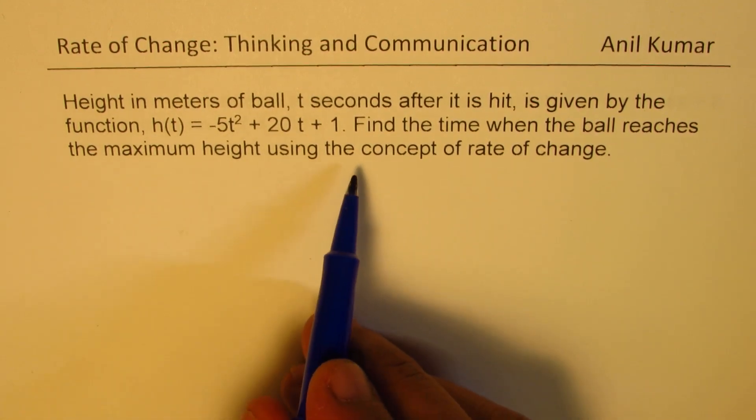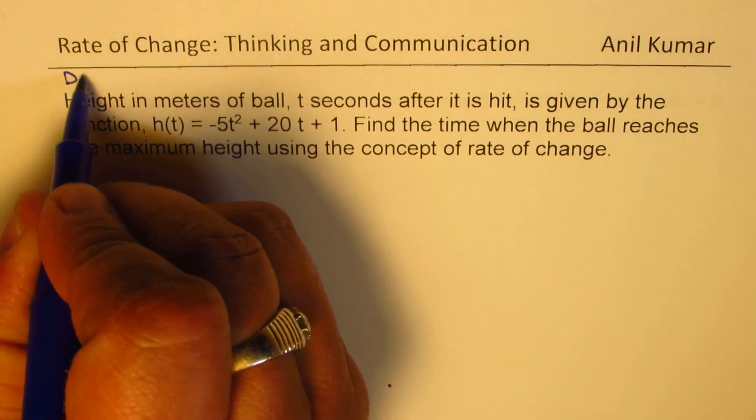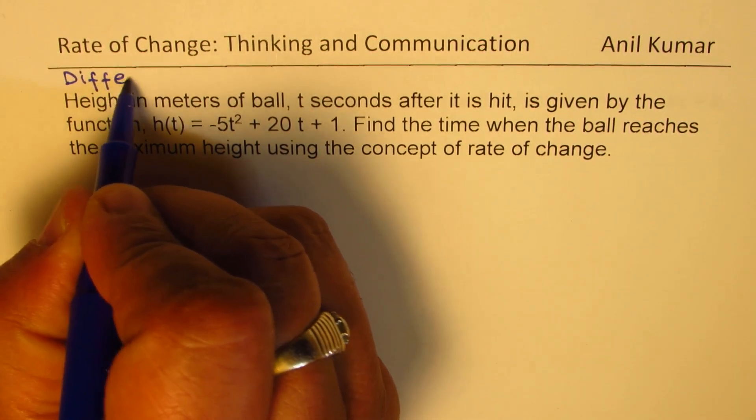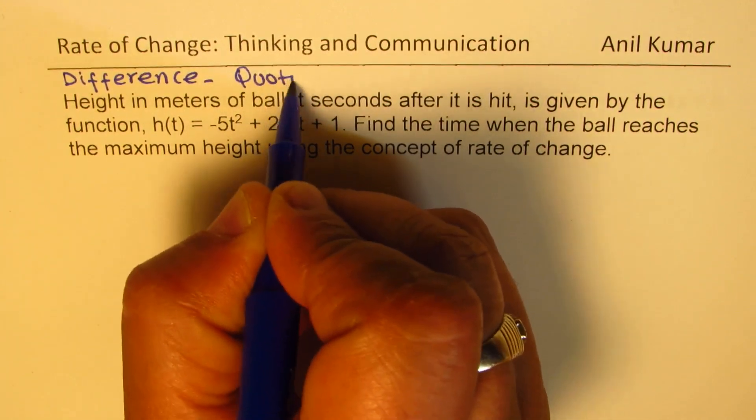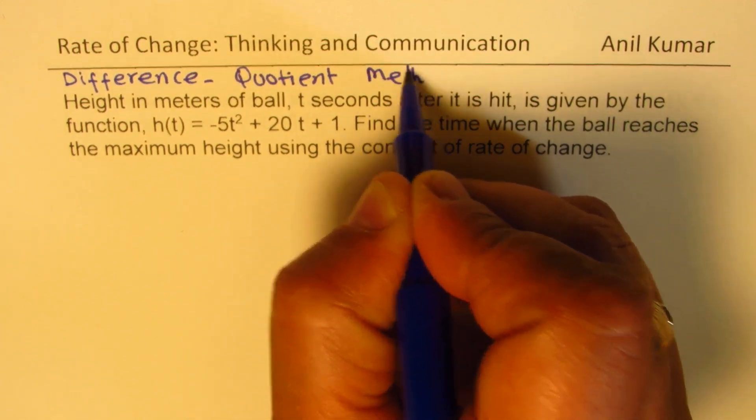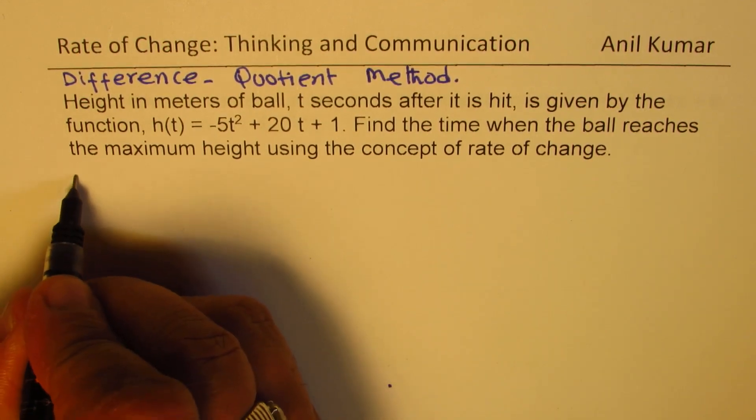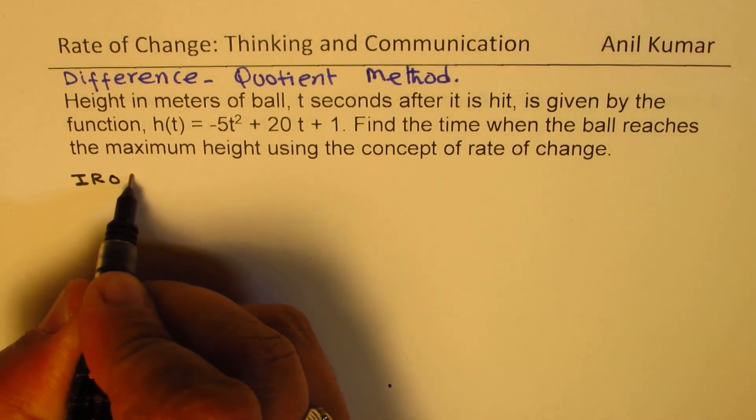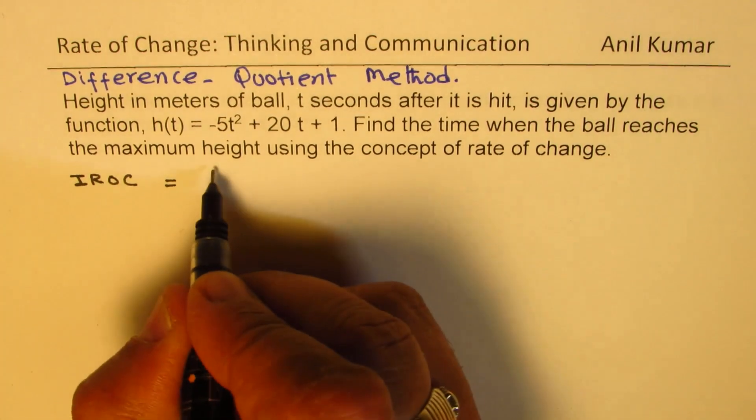So here the point is not given to us, we have to find it, and therefore we are going to use the difference quotient method. Now remember, at the maximum, instantaneous rate of change is going to be 0. So we will find instantaneous rate of change using this difference quotient method.